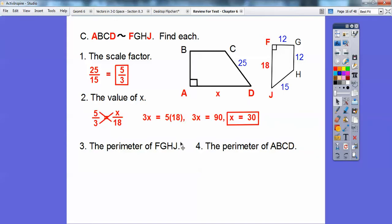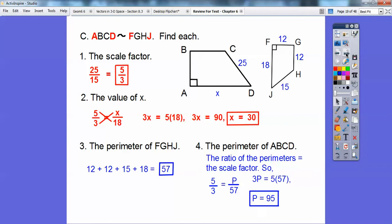Alright, and then this one says find the perimeter of this little guy. Well, you just add up all those numbers right there, and so you get 57. And then we use that perimeter because the ratio of the perimeters is equal to the scale factor. So since the scale factor equals 5 thirds, I'm going to let P be the perimeter of the big guy. And we know the perimeter of the small guy is 57. So we can cross-multiply and find the perimeter of the big guy. So I get 95.